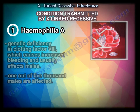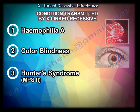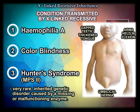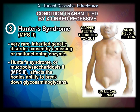The second condition is color blindness. The third is Hunter syndrome — one of the mucopolysaccharidoses. The defect in the enzyme would interfere with the body's ability to break down glucosaminoglycans. It is similar to Hurler syndrome, but different enzymes are involved.